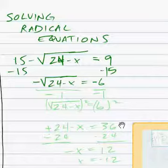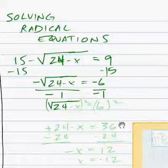And we're going to multiply both sides. We're going to get rid of that negative. So we're going to multiply both sides by negative 1, or divide both sides by negative 1. Which gives us square root of 24 minus x equals 6.